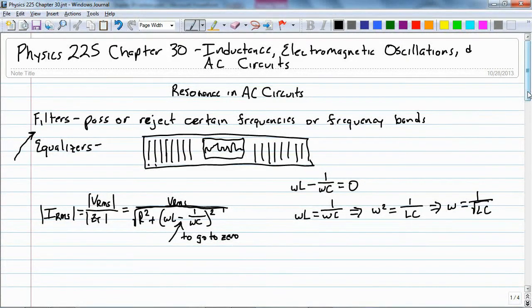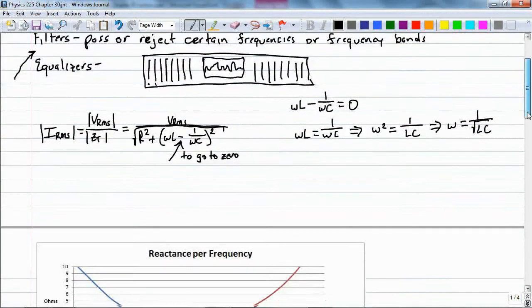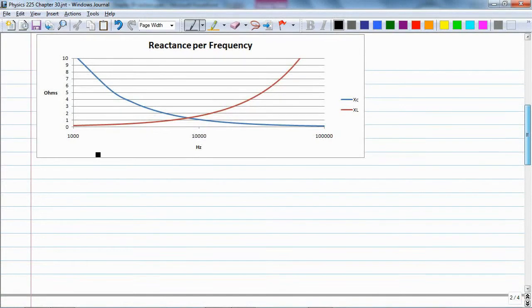Now, let's take a look at how this works. Here we have reactance per frequency. And you notice that the blue line is my capacitive reactance, my red line is my inductive reactance. At low frequencies, this is log normal scale in the horizontal, and linear scale in the vertical. So you notice that at lower frequencies, my inductive reactance is pretty low.